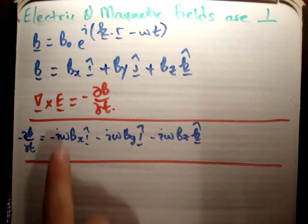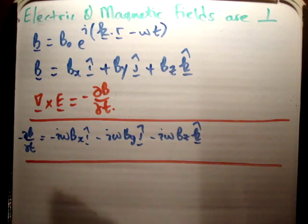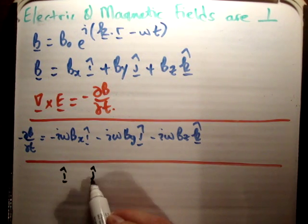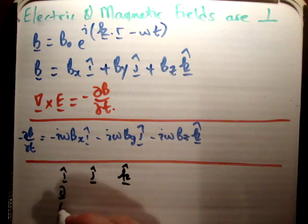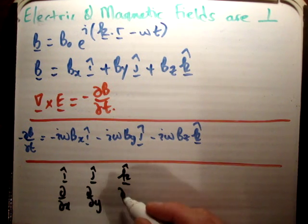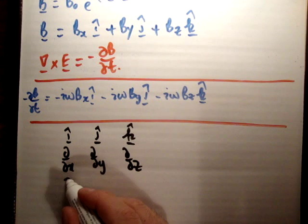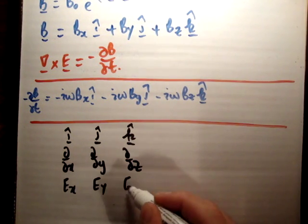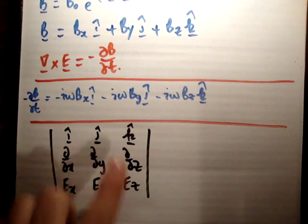The next thing we need to do is compute the cross product of the del operator with the electric field. To do a cross product in three dimensions we need our three unit vectors i-hat, j-hat, and k-hat. Next we write the three components of the nabla operator: ∂/∂x, ∂/∂y, ∂/∂z. Then we write the three components of the electric field: E_x, E_y, E_z. We compute the determinant of this 3×3 matrix, which will have three components.